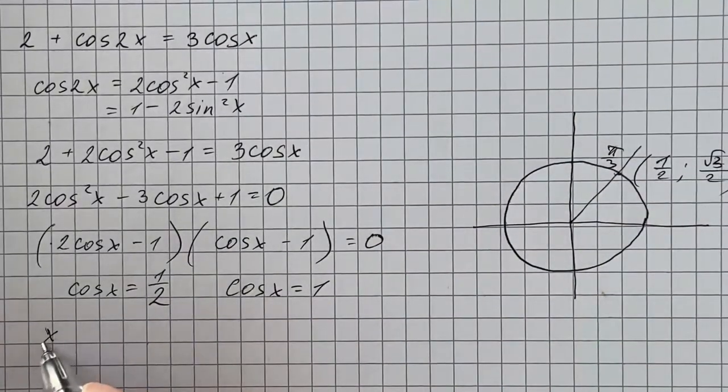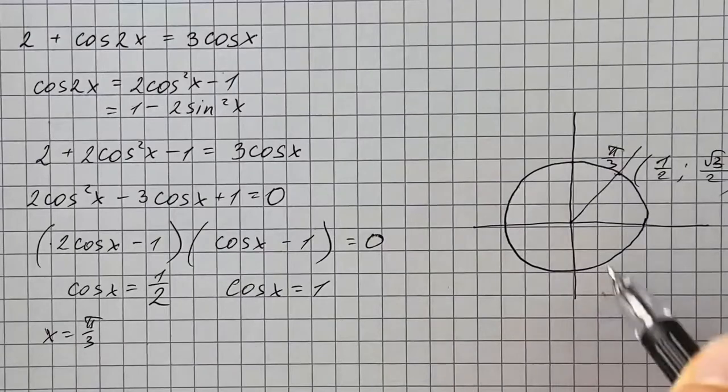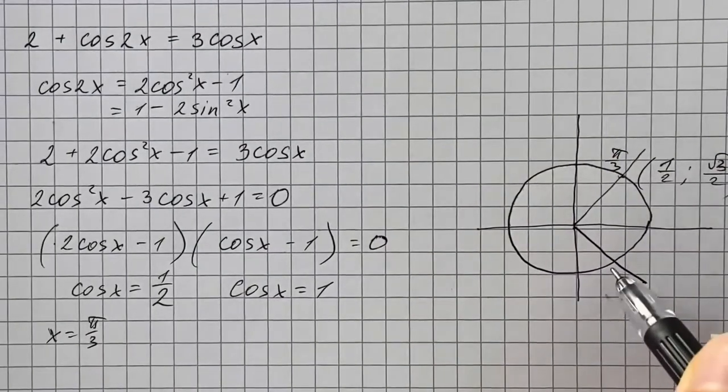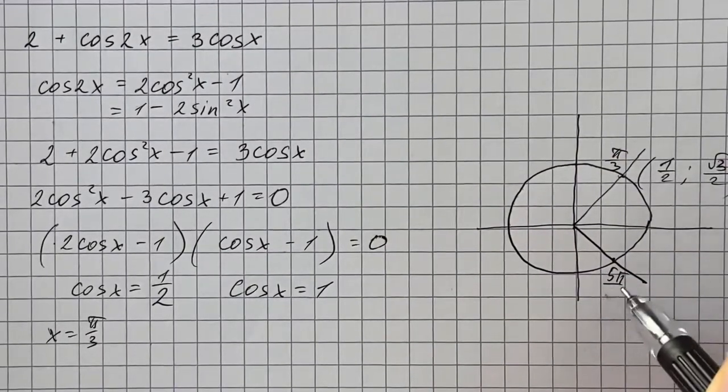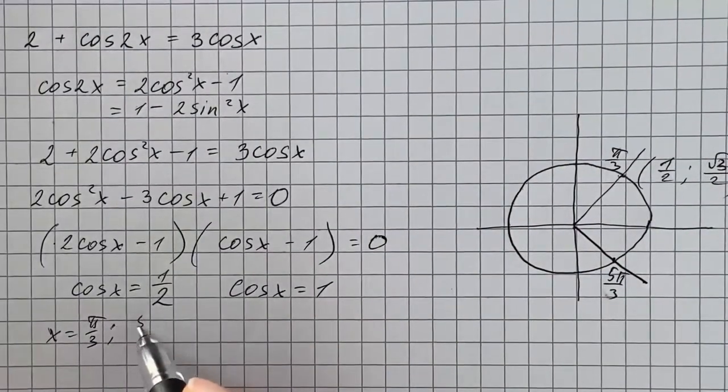And I'm going to have the angle in the fourth quadrant, which is going to be 5 pi over 3, which has the same x coordinate.